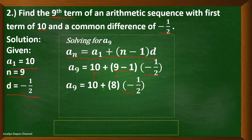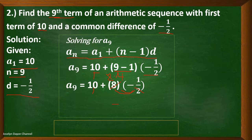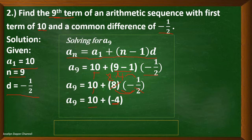Simplify further: 10 plus 8 times negative one half. We have negative 4, because 8 can be factored as 2 times 4, and 2 divided by 2 is 1, leaving 4 times negative 1 equal to negative 4. Then add 10 and negative 4, and the answer is 6. So the ninth term of the sequence is 6.